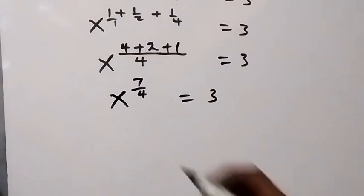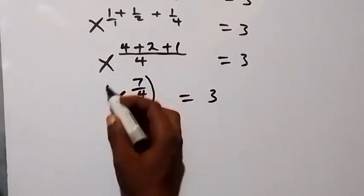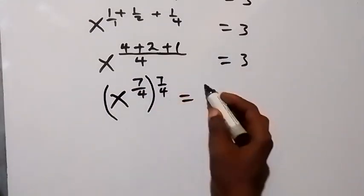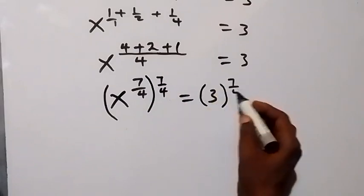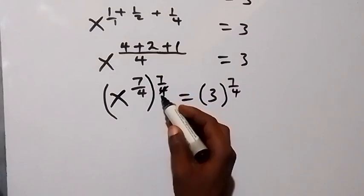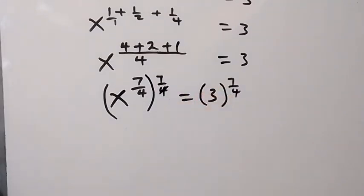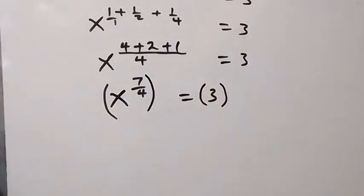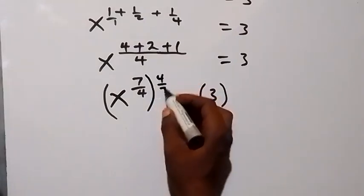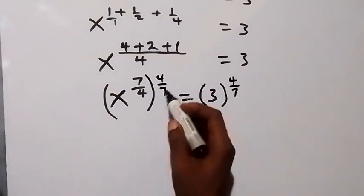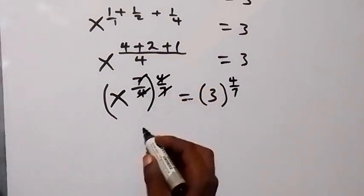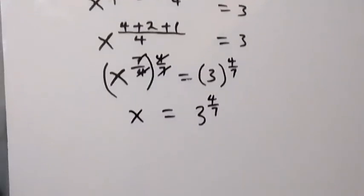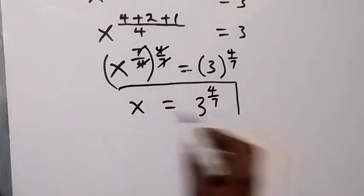To remove this power of 7 over 4, we take the reciprocal and multiply both sides by it. The reciprocal of 7 over 4 is 4 over 7. So we multiply both sides by 4 over 7, and this cancels out on the left. We have x equals 3 raised to power 4 over 7, which is the same result we got from the first method.